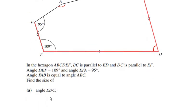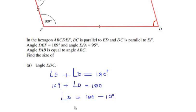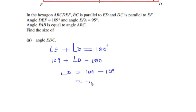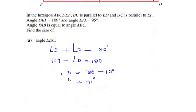Since they are co-interior angles, we can write angle E plus angle D equals 180 degrees. Angle E is given as 109 degrees, so substituting: 109 plus angle D equals 180, giving angle D equals 180 minus 109, which is 71 degrees. So angle EDC is 71 degrees.